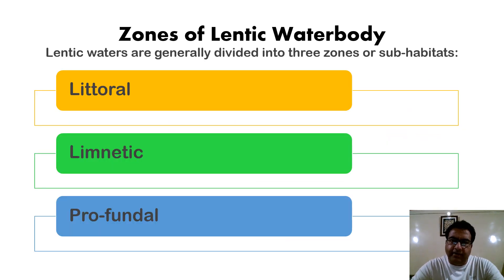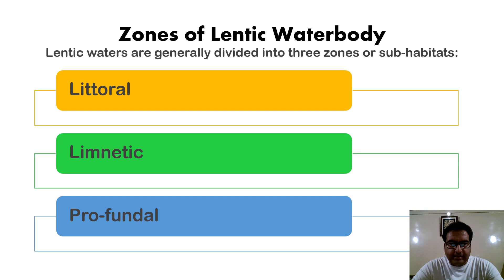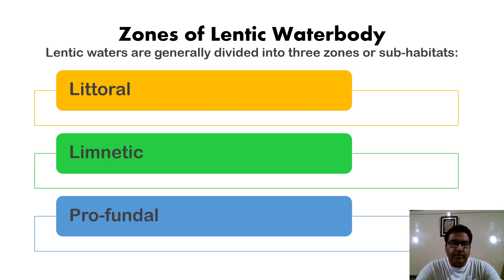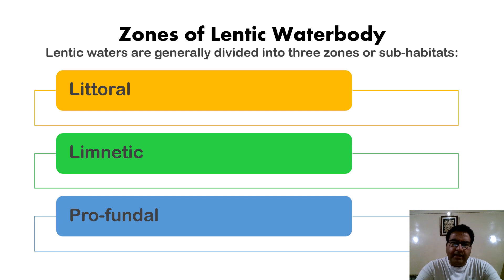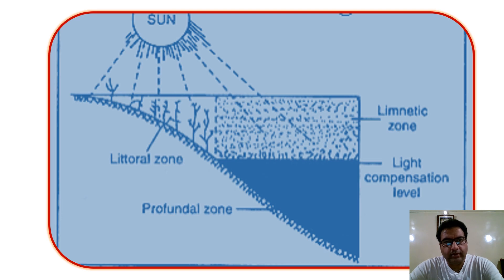Let us know about the zones of a lentic water body. Lentic waters are generally divided into three zones or sub-habitats: the littoral zone, the limnetic zone, and the profundal zone. Many times other zones can also be named, such as the sub-littoral zone or the light compensation point. We also have the vortex zone and different thermal layers of a water body — the epilimnion, the hypolimnion, and the metalimnion.